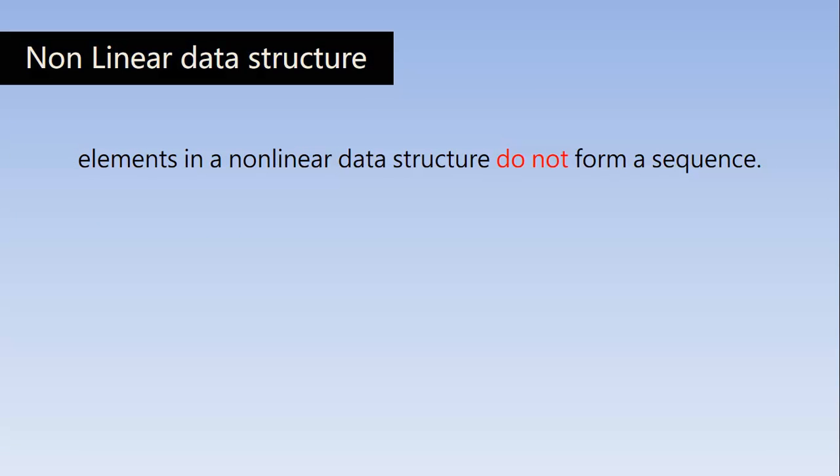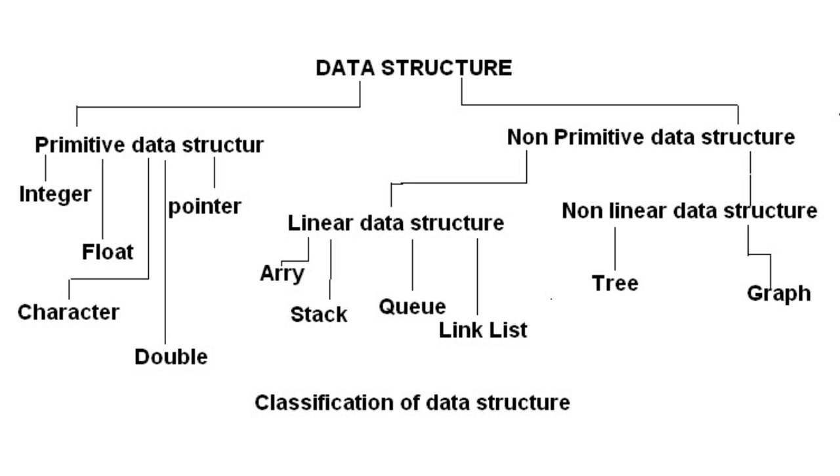And the other type is non-linear data structure. Elements in a non-linear data structure do not form a sequence. They are arranged in random order. Examples are trees and graphs. Here the data elements are arranged in the form of relationships among them. So regardless of the type of data structure, it's all about storing the data into the computer's memory. With this picture, you will get a clear idea of different types of data structures.